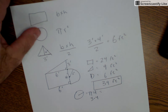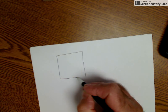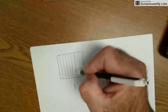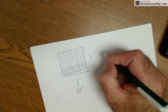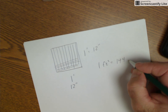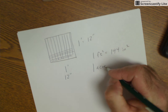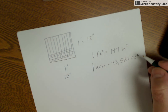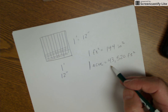A few practical things in construction and woodworking: one square foot is 12 inches by 12 inches, which equals 144 square inches. An acre is 43,560 square feet. A quarter acre rounds to about 10,000 square feet, and an eighth acre is roughly a 5,000 square foot lot.